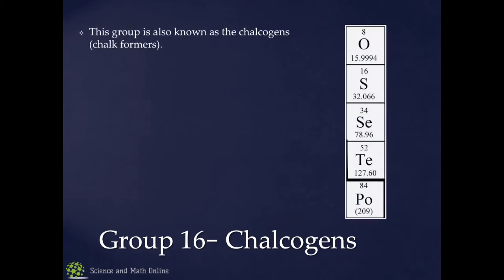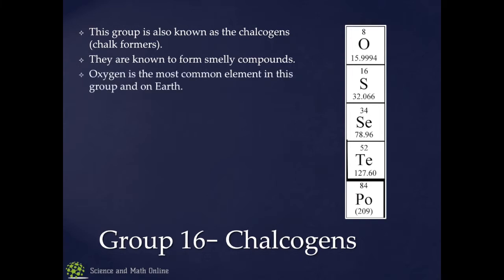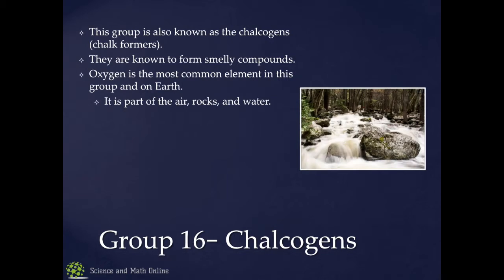Group 16 — the chalcogens, which means chalk formers. They're known for their smelly compounds. Oxygen is the most common element in this group and on Earth because it makes up most of the rocks — carbonates, silicates, and that kind of stuff all have oxygens on the end. Oxygen is part of every single thing: there's oxygen in trees, in water, in rocks, in the air. It's everywhere.